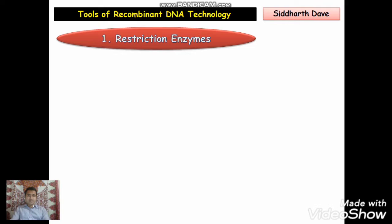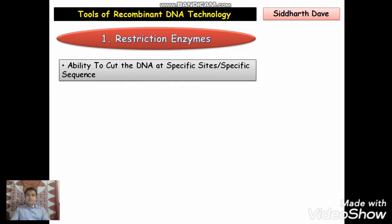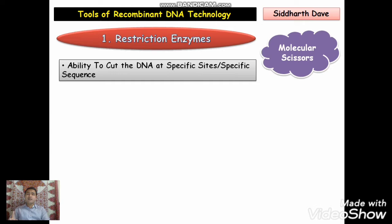Let us discuss the first tool of recombinant DNA technology, that is restriction enzyme. First of all, we should know that restriction enzymes are protein in nature. These are the enzymes that have the ability to cut the DNA at a specific site or a specific sequence. This is the reason why they are also known as the molecular scissors, as they are involved in cutting of a DNA molecule.